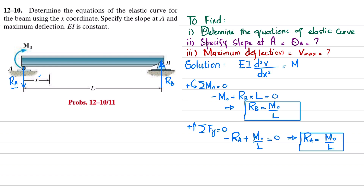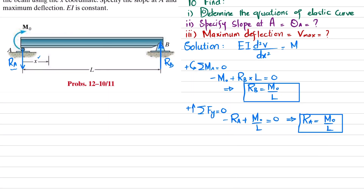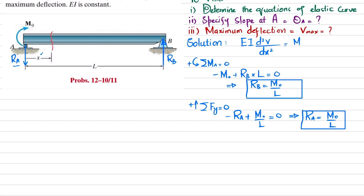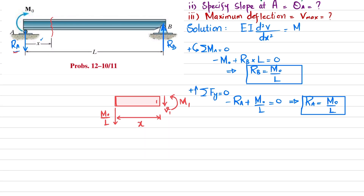Now we cut the beam at coordinate x and draw the free body diagram. At the left end we have R_A = M₀/L acting downward, and the distance to the cut is x. At the cut, we have a shear force V₁ and moment M₁. The external moment M₀ is also present at point A.